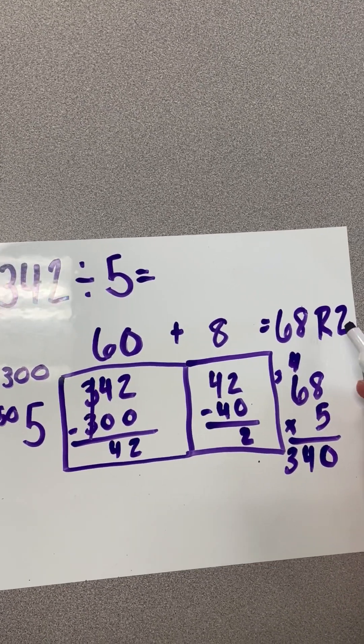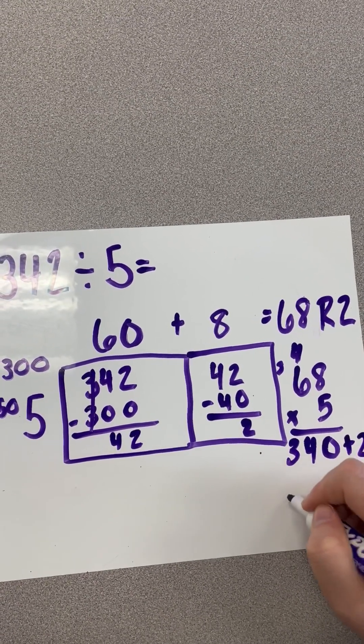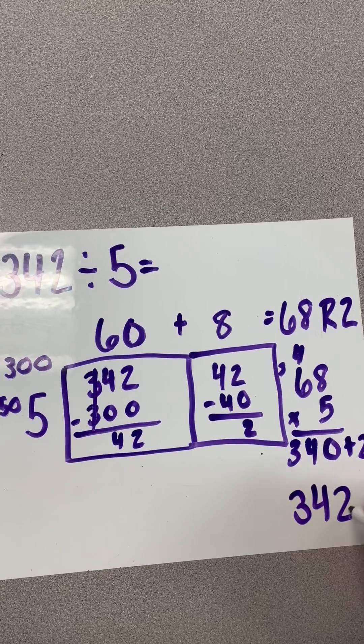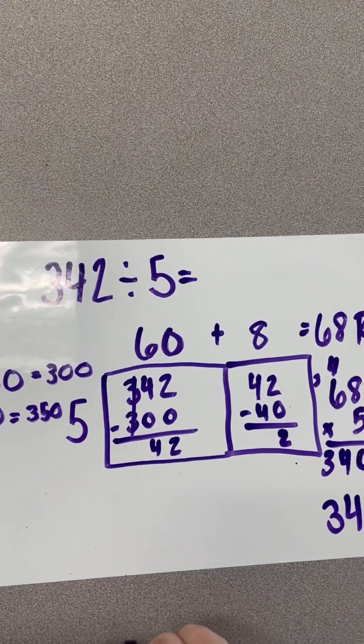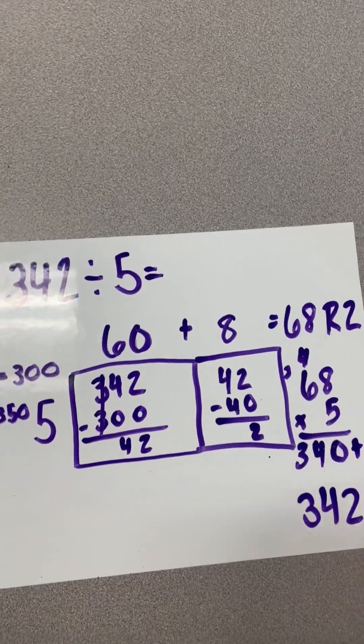Now, I'm not done yet, because I have to add those 2 back in. So, when I add 2 to 340, I get 342, which gets me back to where I needed to be, and that tells me that our answer is correct.